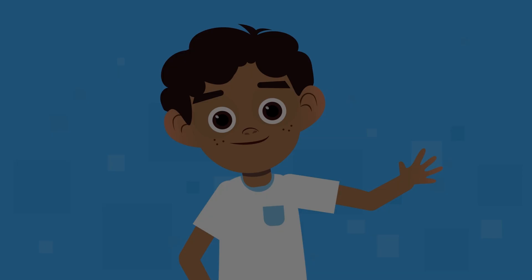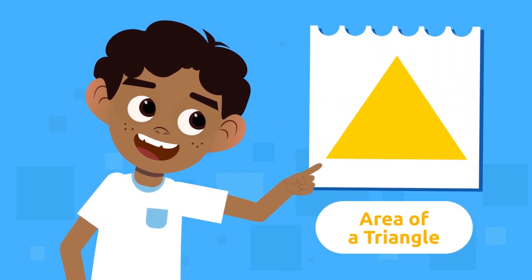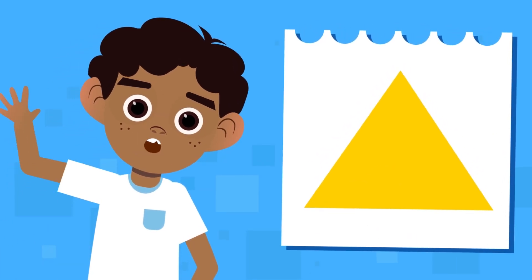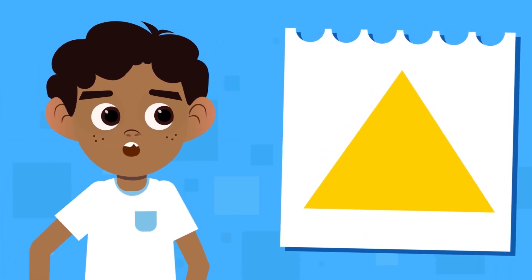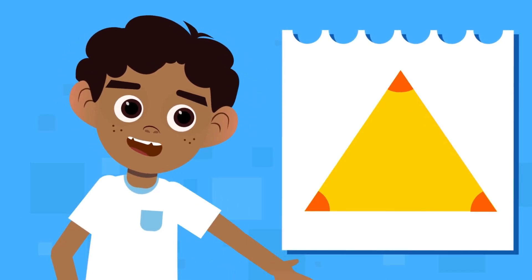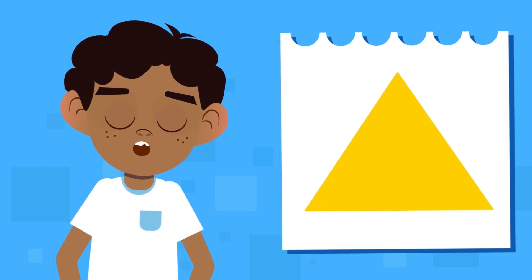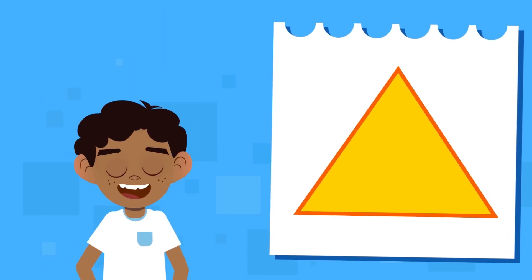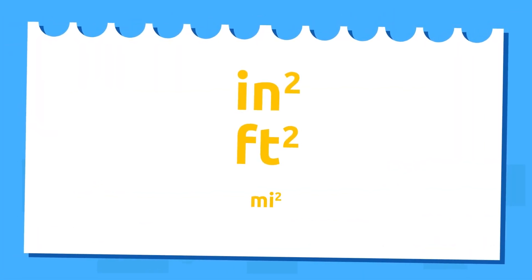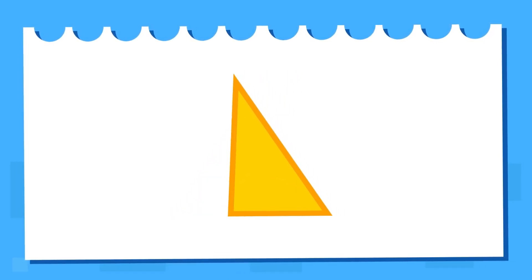Hello friends! Today we're going to show you how to calculate the area of a triangle, also called the surface of a triangle. Let's start by remembering what a triangle is. A triangle is a plane figure with three sides that forms three angles and three vertices — making it the geometric figure with the fewest sides. Its area can be measured in square inches, square feet, square miles, and many other units of measurement.